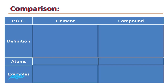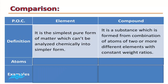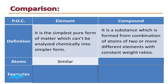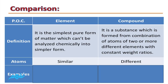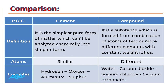Let's compare between element and compound. What is meant by element? It is the simplest pure form of matter which can't be analyzed chemically into a simpler form. What is meant by compound? It is a substance formed from the combination of atoms of two or more different elements with constant weight ratios. Elements are formed from similar atoms, while compounds are formed from different atoms. Examples for elements: hydrogen, oxygen, aluminium, and sulfur. Examples for compounds: water, carbon dioxide, sodium chloride, and calcium carbonate.